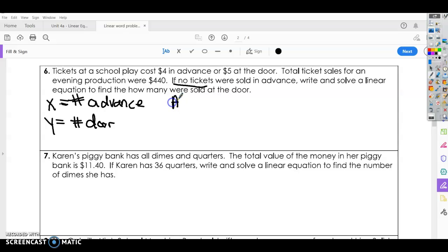Alright, so we're going to have AX plus BY equals C again. So we want to know how many tickets are the cost of tickets in advance and the cost of tickets at the door. Okay, so for number one, we're going to say $4.00 times the number of tickets sold in advance plus $5.00 times the number of tickets sold at the door. And the total that we make off the evening production is $440. Okay, that comes from right there.